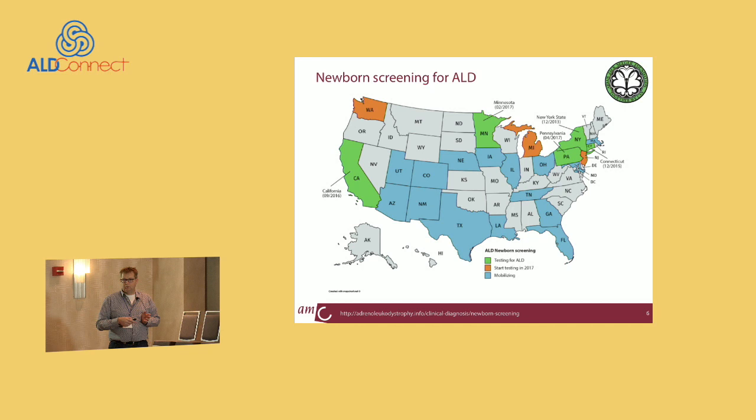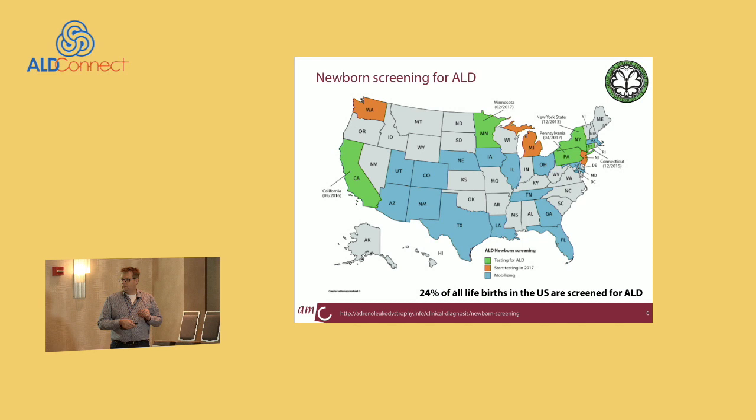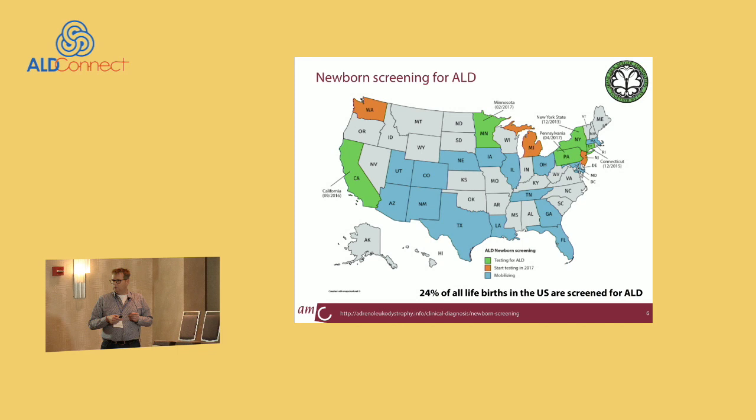Washington State will start in March 2018. Even though these are only five states, it's important to recognize that they represent 24% of all live births in the US. In the US, 4 million children are born each year, meaning a million newborns are screened for ALD each year — which is quite an impressive success already.